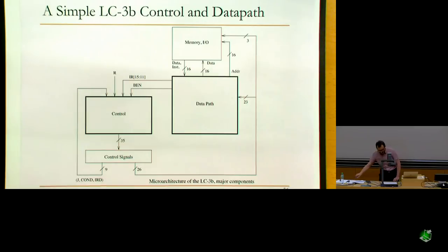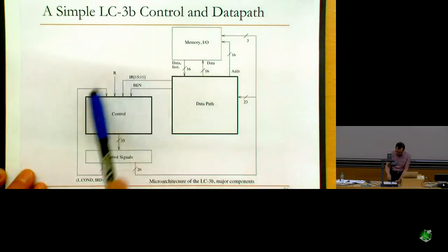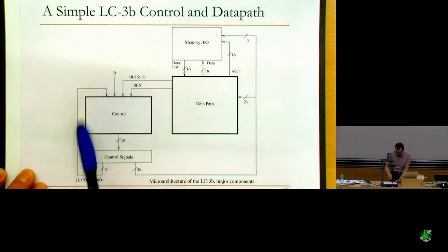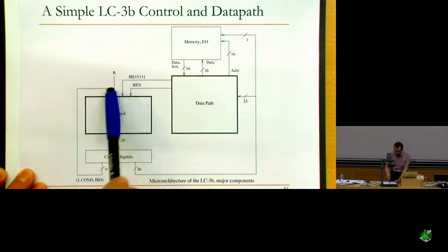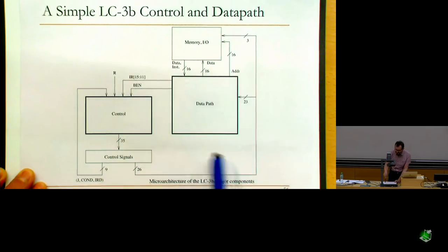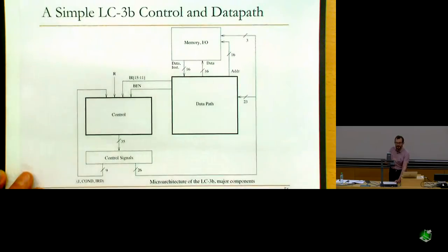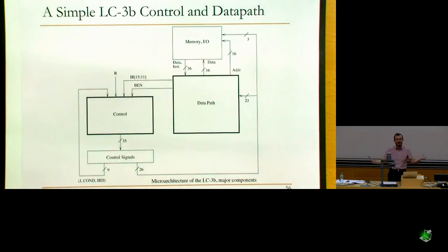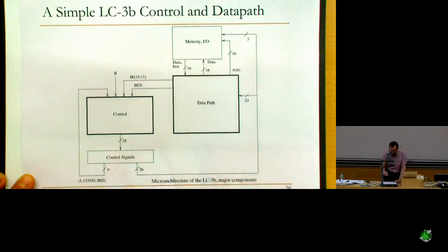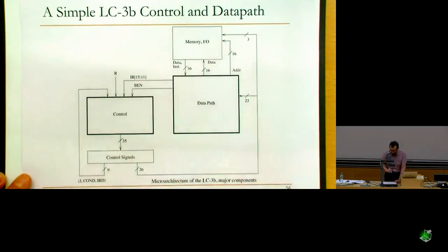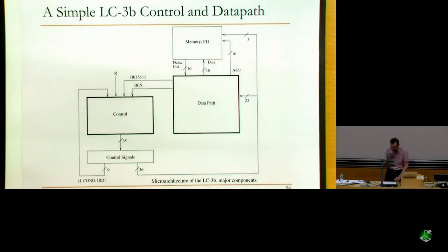Basically you have this control structure — the micro-sequencer and control store — producing the micro-instruction, operating concurrently with what's happening in the data path. This provides a better separation between control and data path. There's also memory and I/O, as we will discuss.